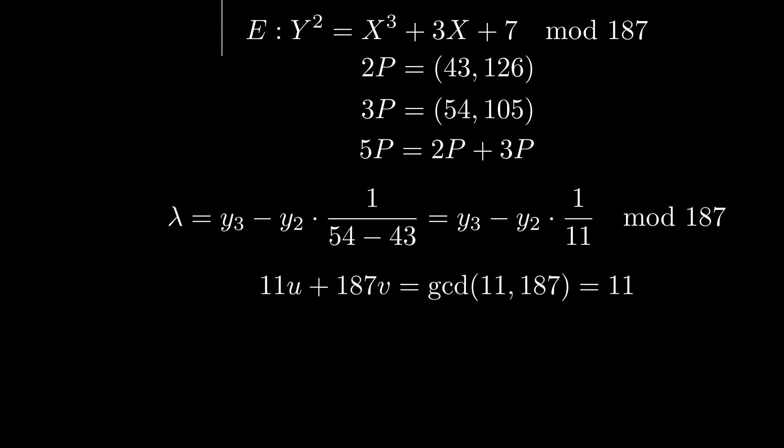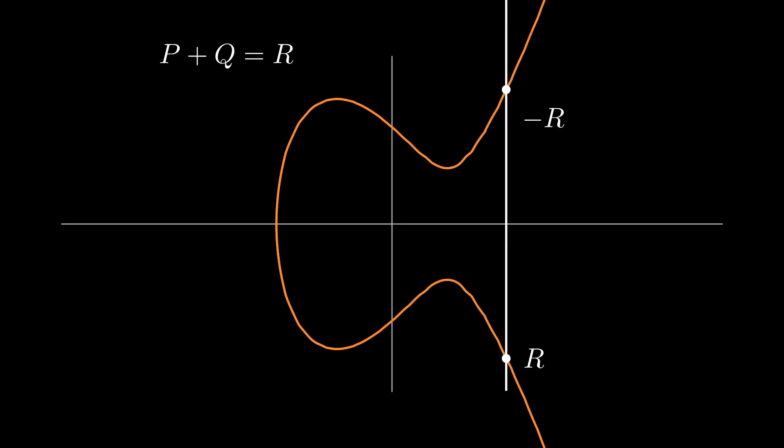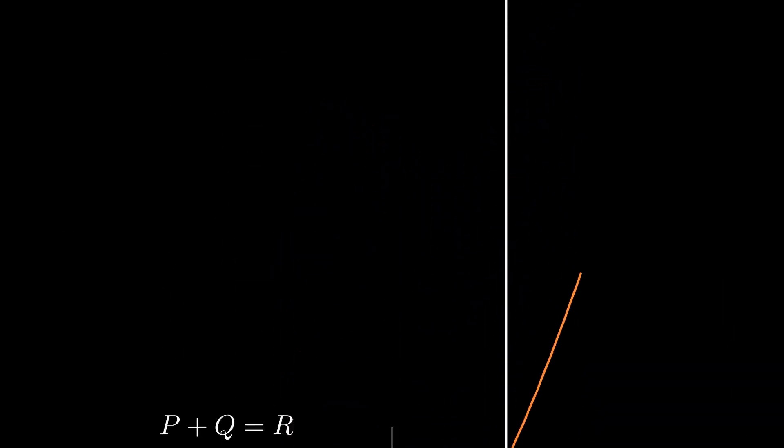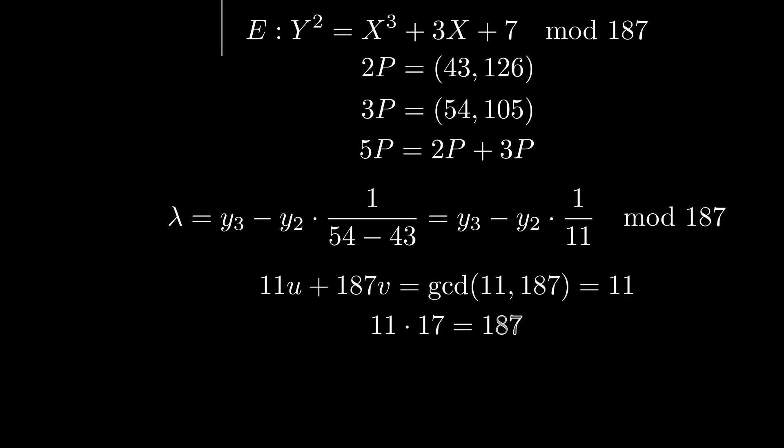11 is not equal to 1, which is what we needed to find our modular multiplicative inverse. So the slope is undefined, as if we divided by 0 and we fail to get a point from addition that isn't the one at infinity. But hey, at least we know 11 is a factor now.